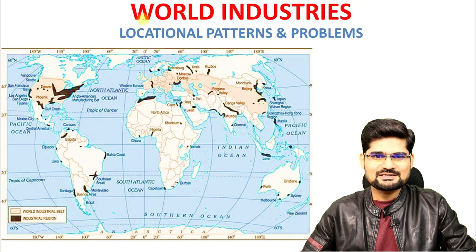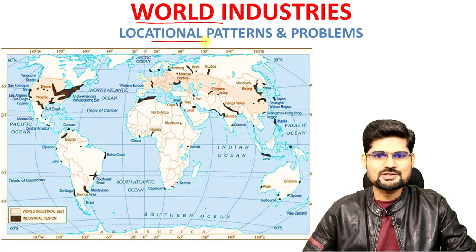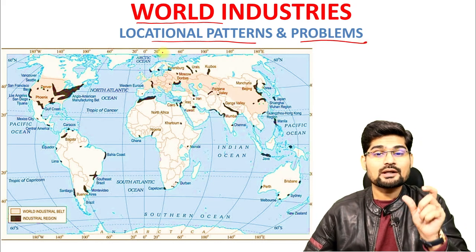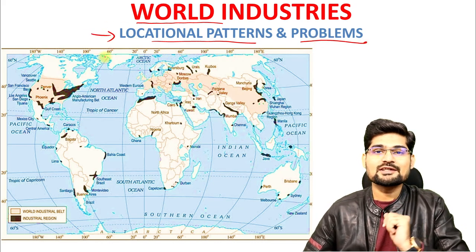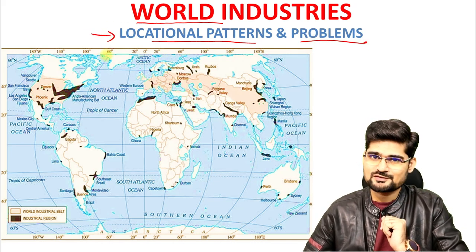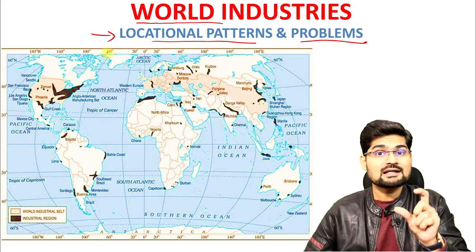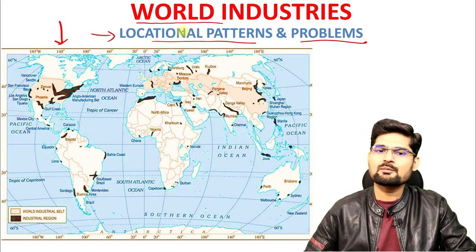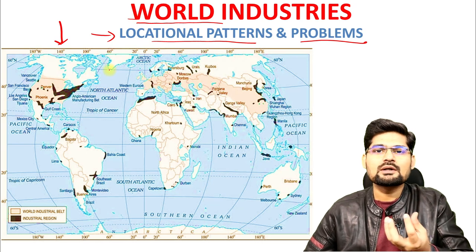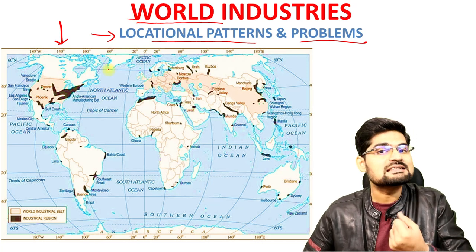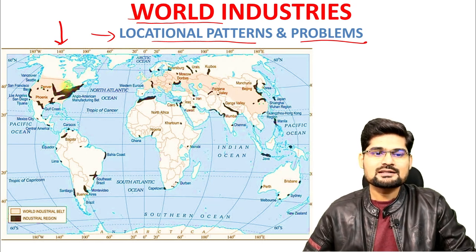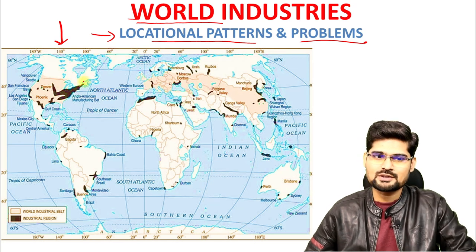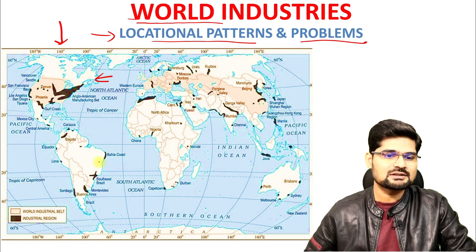Let's look into the world industries, their locational patterns and problems. Whenever we say locational patterns, it's essentially human geography. In economic geography, it has a very special position. If you look into this map of world industries, you'll find where geography lies in economics. Look at the geographical pattern of these industrial hubs across the world — in America's north and south, the coastal areas are essentially the industrial belts.